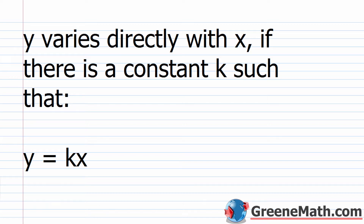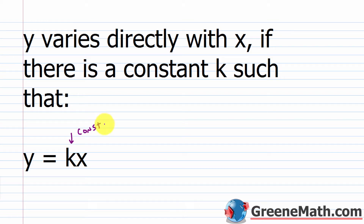I want to start out by saying y varies directly with x if there is a constant k such that y is equal to k times x. This is generally the first thing you're going to read in your textbook when you're in a direct variation section. They have a special name for k — it's called the constant of variation.